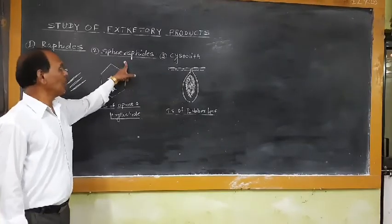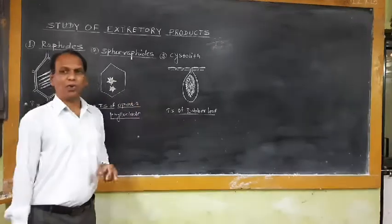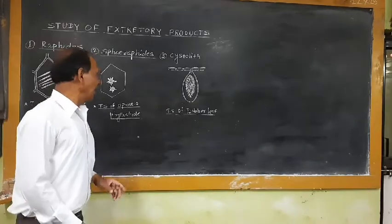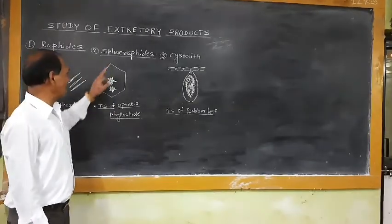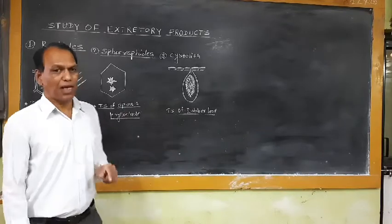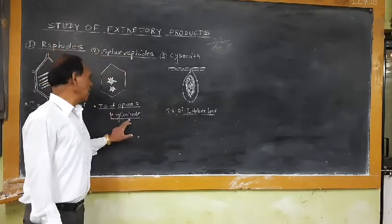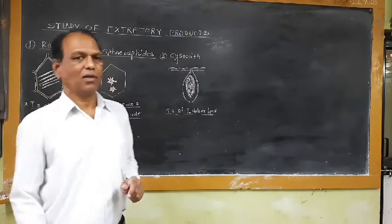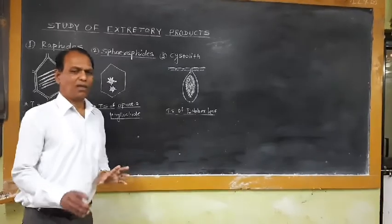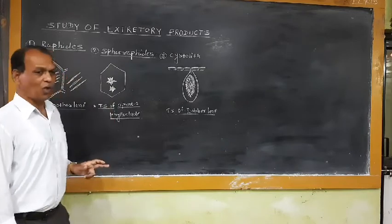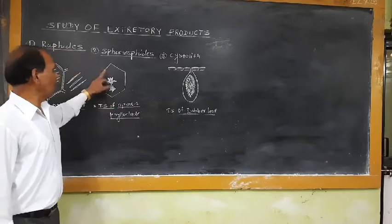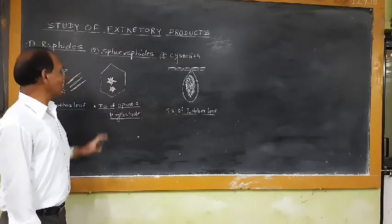Another kind of excretory products are studied under the heading of spherophytes. These spherophytes are also calcium oxalate crystals. They are looking like stars. That means these star-shaped crystals of calcium oxalate are commonly known as spherophytes. For example, if we take the transverse section of Nerium or transverse section of Dieffenbachia phylloclade, in living parenchyma cells of Dieffenbachia phylloclade, the parenchyma cells contain two, three, four or many star-shaped spherophytes which are examples of waste compounds stored in the living parenchyma cells in the form of star-shaped calcium oxalate crystals.